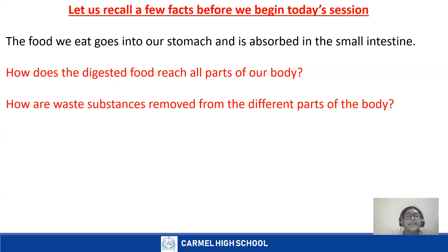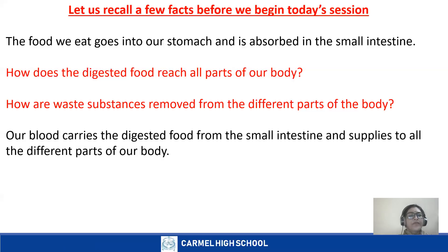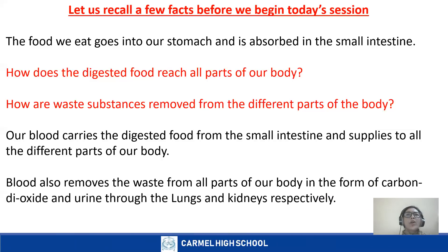Now, how are waste substances removed from the different parts of the body? We had discussed this in the excretory system in grade four. The waste substances are removed in the form of carbon dioxide from the lungs, and in the form of urine through the kidneys. The skin also acts as an excretory organ by removing waste in the form of sweat. Make a note of these two points: blood carries digested food from the small intestine and supplies to all parts of the body.